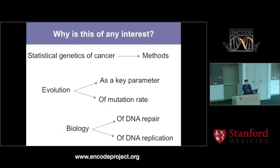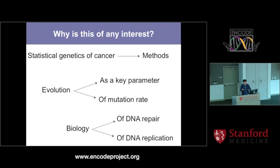There are multiple reasons to study this data. One is statistical genetics of cancer — using it in an applied fashion — and this is where I'll focus for this talk. We're also thinking about evolution in two different flavors. One is that mutation rate is a very important parameter in evolutionary studies, and any type of evolutionary inference depends on mutation rate.